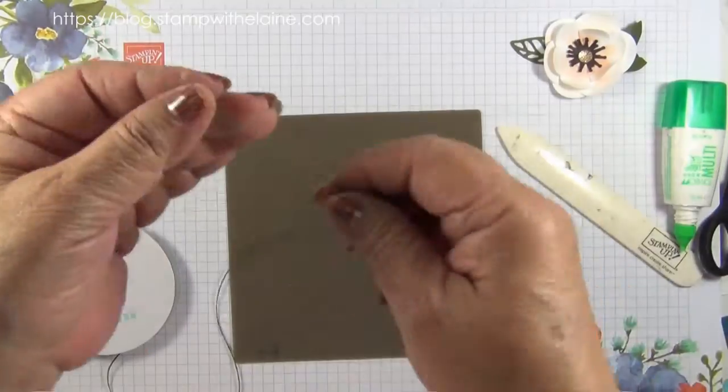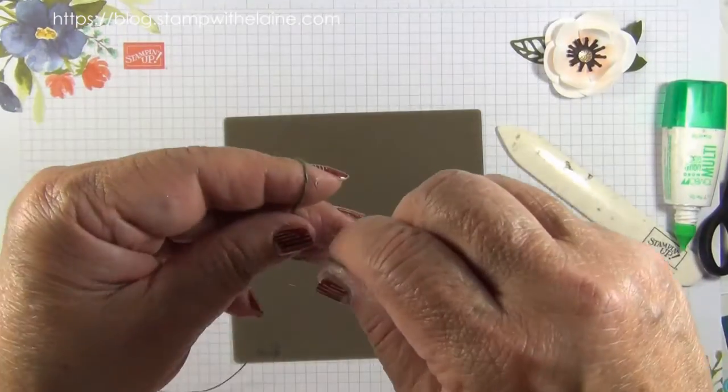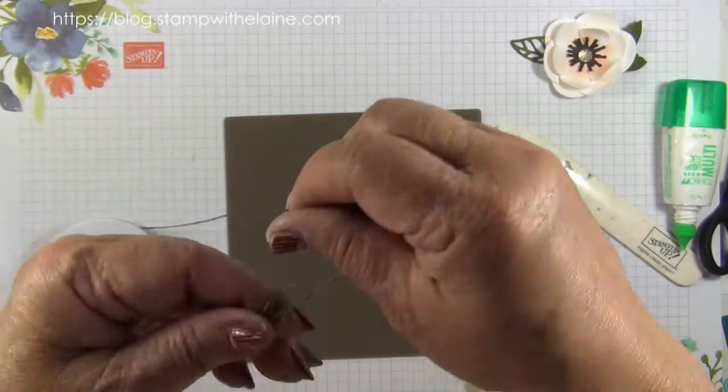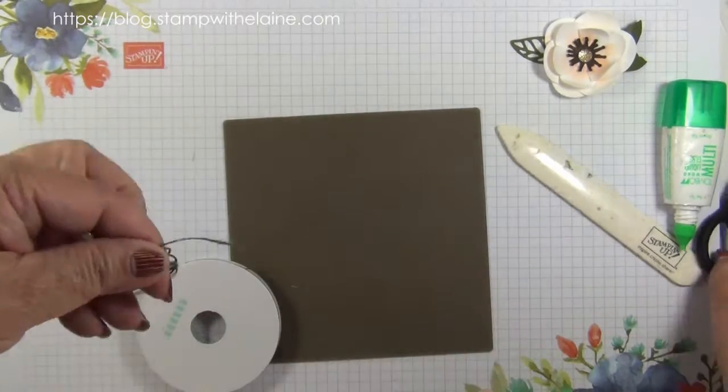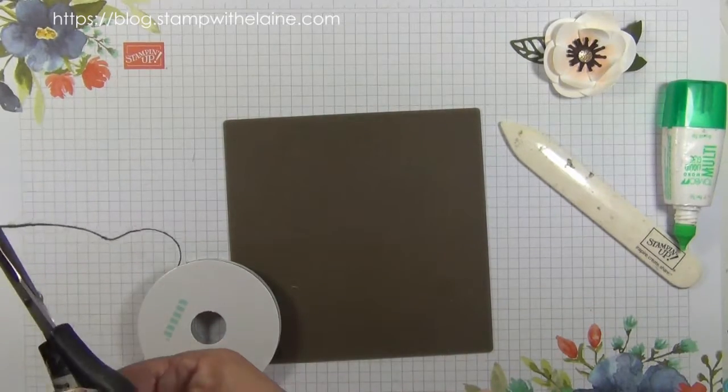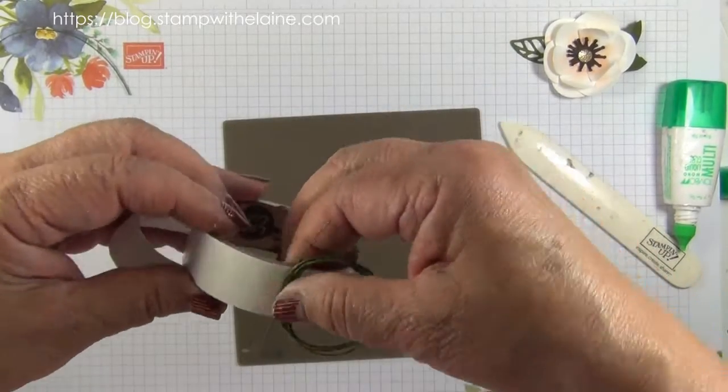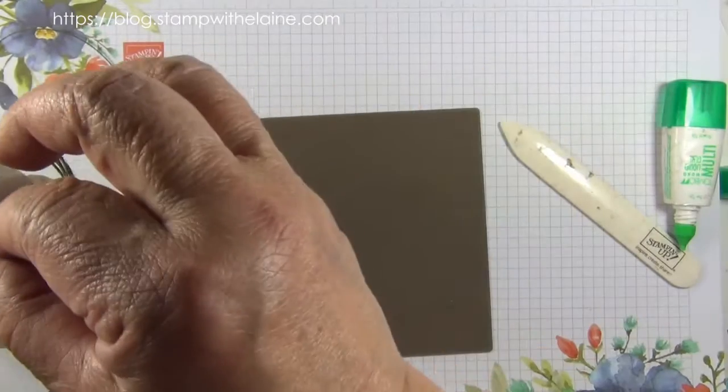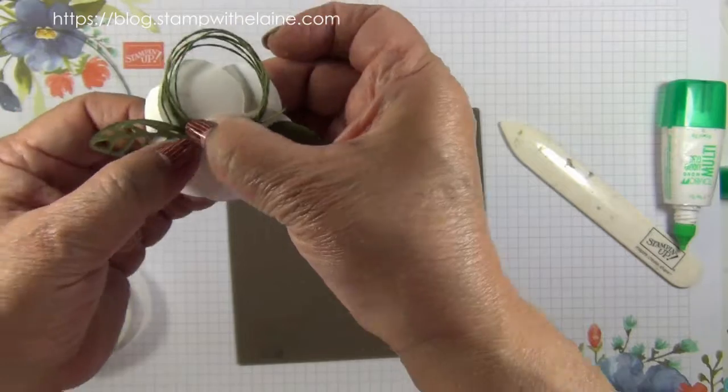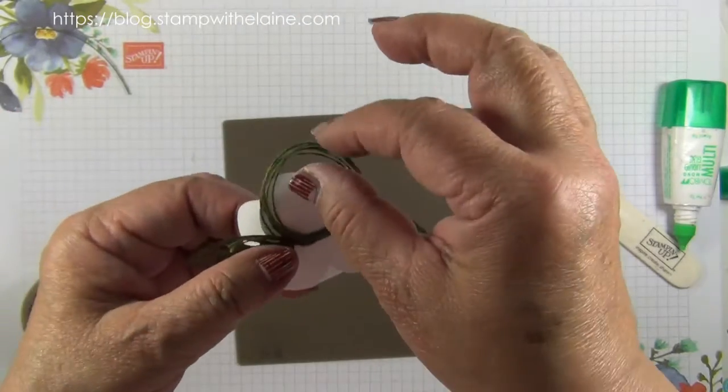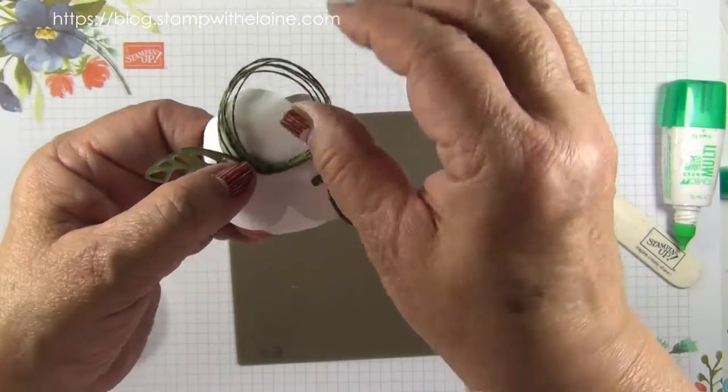Grab a piece of twine and wind it around your fingers a couple of times. Slip it off, attach it to some glue dots, attach that to the middle of your flower on the bottom, and then you can manipulate.